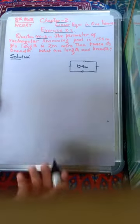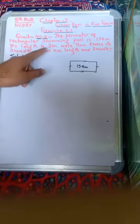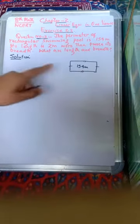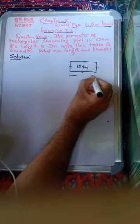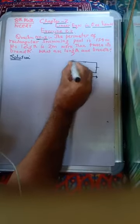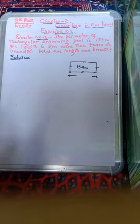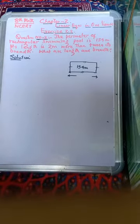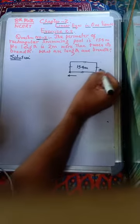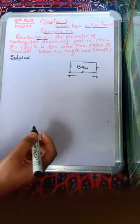And there is another clue: its length is 2 meters more than twice its breadth. यह breadth से ज्यादा है — कितनी ज्यादा है? Breadth से दुगनी, और दुगनी के बाद 2 meters ज्यादा है। So मतलब क्या होता है इसका?